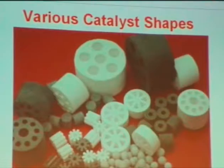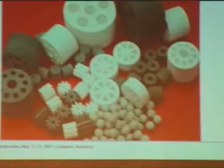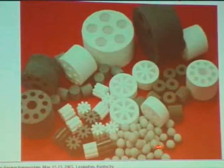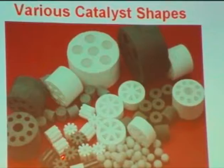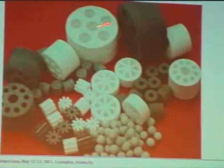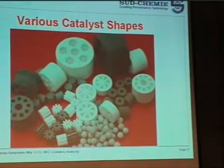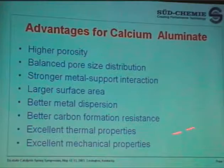We are a calcium aluminate manufacturer and want to find different applications, so we design different shaped calcium aluminate supports. All these shapes are made by calcium aluminate — small spheres as small as 2 or 3 millimeters, fancy shapes to provide higher geometric surface area, and big pieces as well, with diameters up to 32 millimeters.